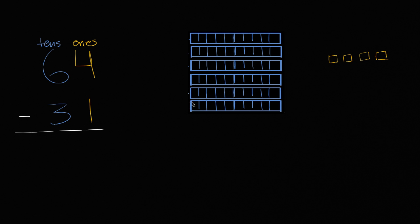It means six groups of 10. And so we can visualize that right over here. Six tens. One, two, three, four, five, six groups of 10. Or another way to think about it, six tens, these are 60 boxes right over here in groups of 10.